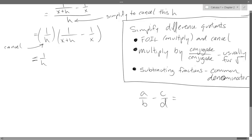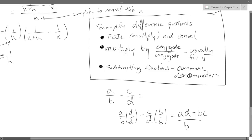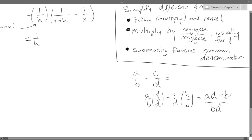We don't have anything in common, so x plus h times x will be our common denominator. To subtract a/b minus c/d, multiply the first by d/d and the second by b/b, giving us ad minus bc all over bd. Some people call that cross-multiplying. That's how we're subtracting these fractions.